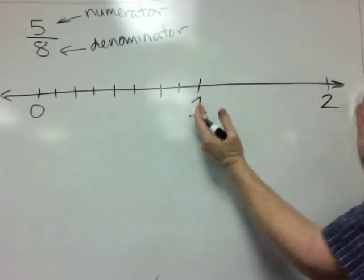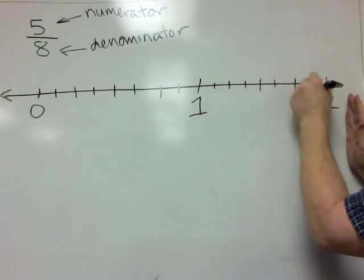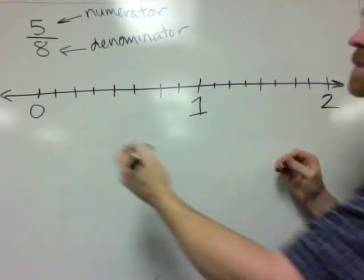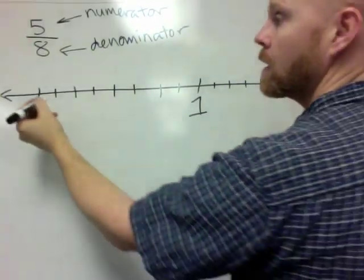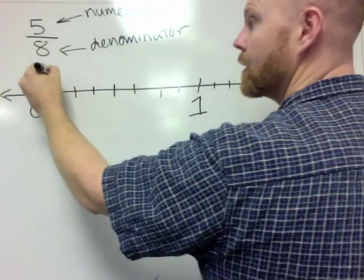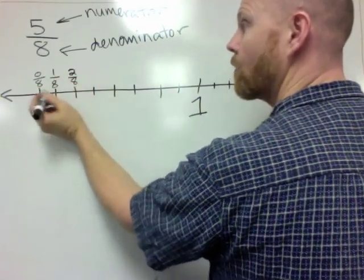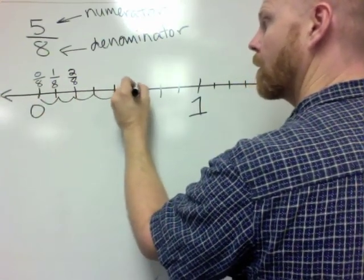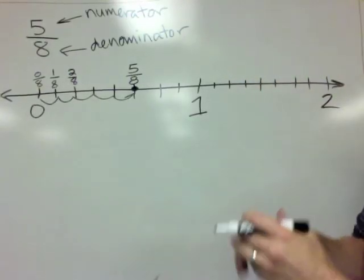This 5 means you need to move over 5 of those intervals. So here is 0/8, here is 1/8, and then another interval is 2/8. So eventually 5/8, we're going to go over 1, 2, 3, 4, 5, right there. Right here is 5/8. So that's what a fraction means.